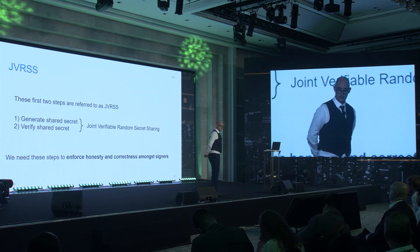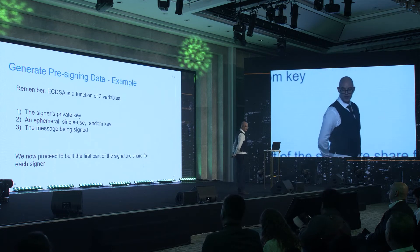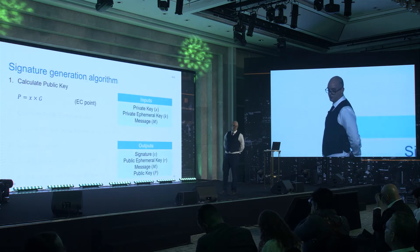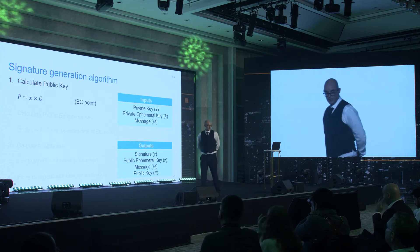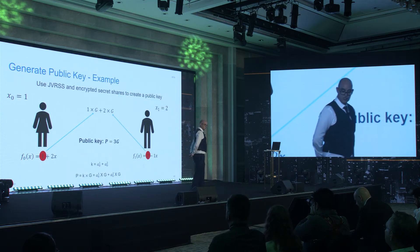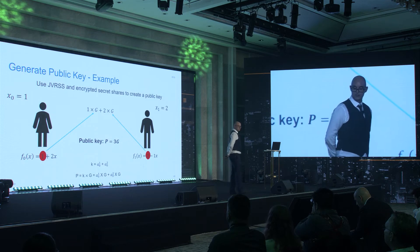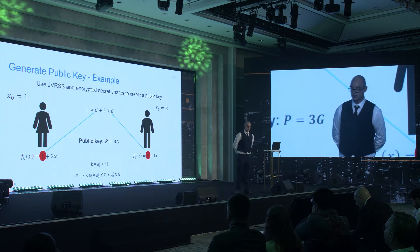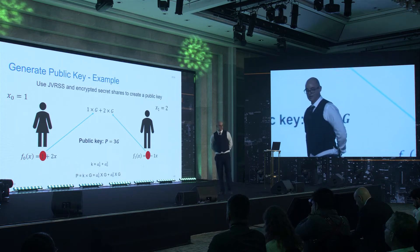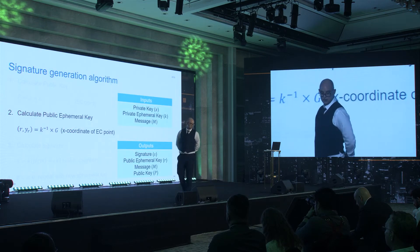Now we generate the ephemeral key and some pre-signature data. For ECDSA, we have three variables: a private key, a single-use random key, and the message. The public key is an EC point — it's the private key times G — but since we can't do that directly, we derive the public key as the sum of the coefficients multiplied by G. Because of elliptic curve commutativity, the formula holds: a point multiplied by G equals the point summed then multiplied by G. Because we've done the secret sharing in the previous round, we know this is true. So now we calculate this single-use ephemeral key by running another secret sharing to generate a K value.